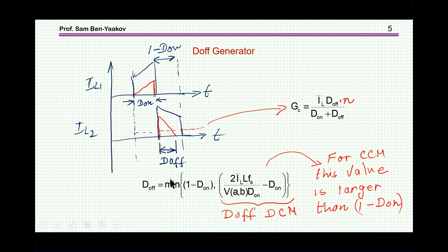As it turns out, you can calculate this DOFF by this equation, which says that this DOFF is equal to two times average current, times the inductance of the inductor, switching frequency. VAB is the voltage across the inductor during the ON time, this is then times DON, minus DON. This is explained in the papers that I'm referencing. So this is the value of this DOFF. As it turns out, if you are in the CCM case, if you use this equation or calculate the value of this equation when you are in CCM, the number you will get will be larger than 1 minus DON.